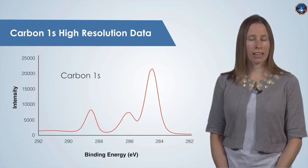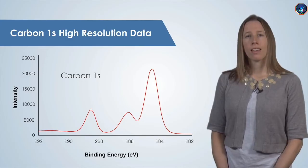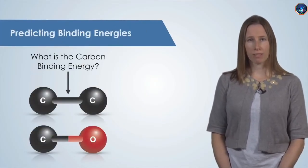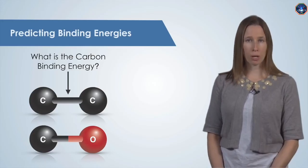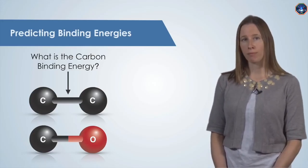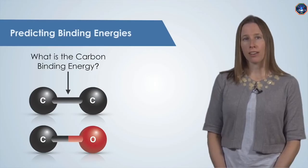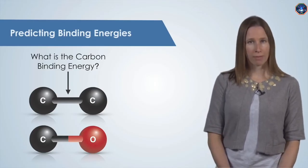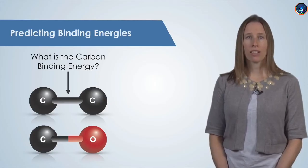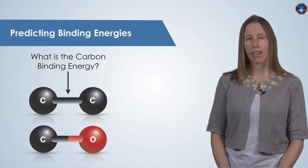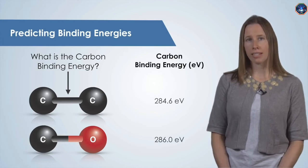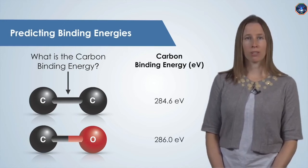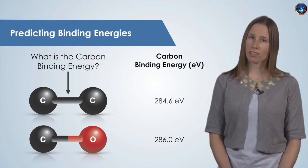What affects the binding energy for an element like carbon? Here are two different environments that a carbon atom could be found in: carbon bound to another carbon atom, and carbon bound to an oxygen atom. The binding energy of an electron will depend on the atom that it's attached to, the carbon atom, and also the atoms bound to the carbon. As you can see, the electron binding energy for carbon changes if that carbon atom is bound to another carbon atom or to an oxygen atom.